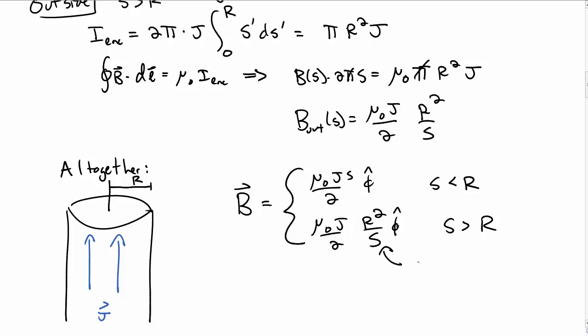Outside, it just looks like the magnetic field from a line current. It falls off like 1 over s, as you would expect from a normal line current rather than a thick line.